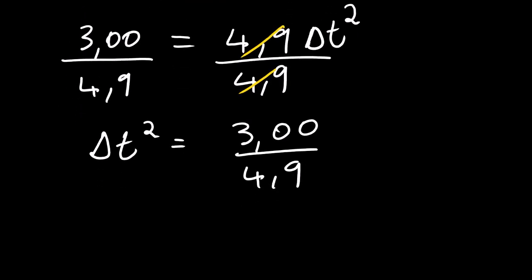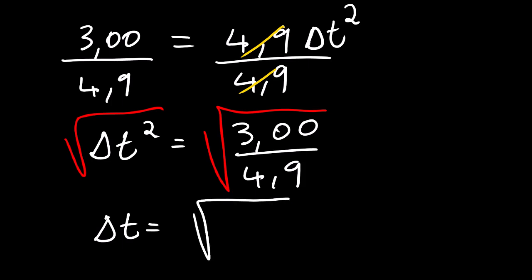How do we remove power 2? We square root both sides. Remember, time is a scalar quantity, so we cannot consider the negative side of it from the square root.